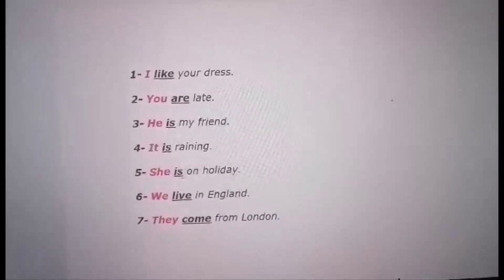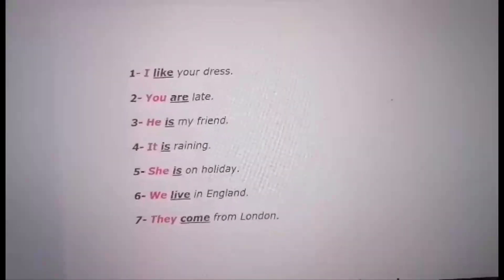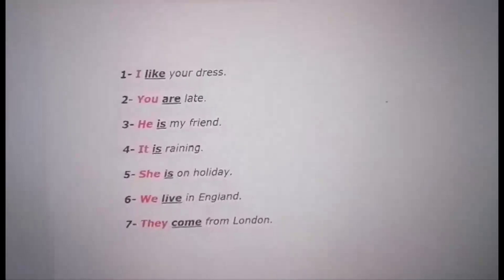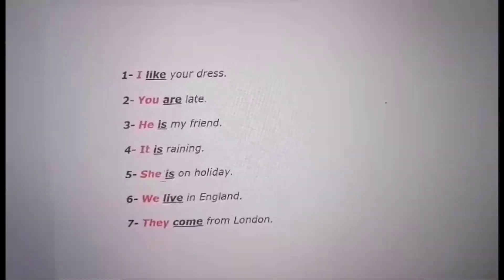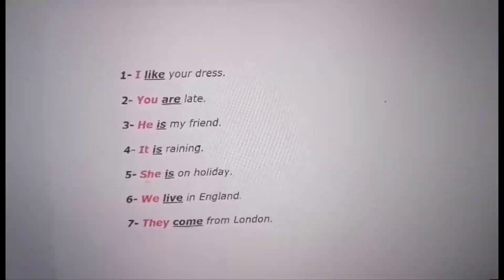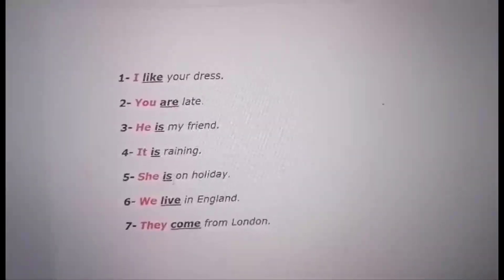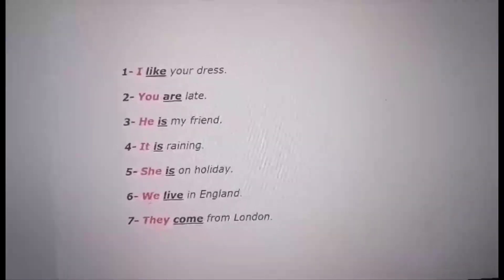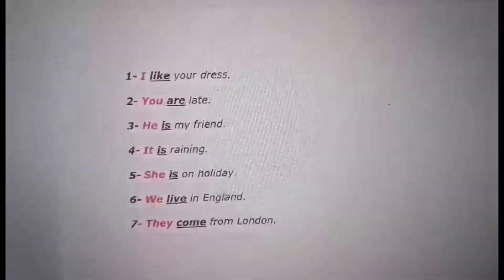Number five: She is on holiday. 'She' is the subject, 'is' is the verb — she comes before the verb 'is.' Number six: We as subject.